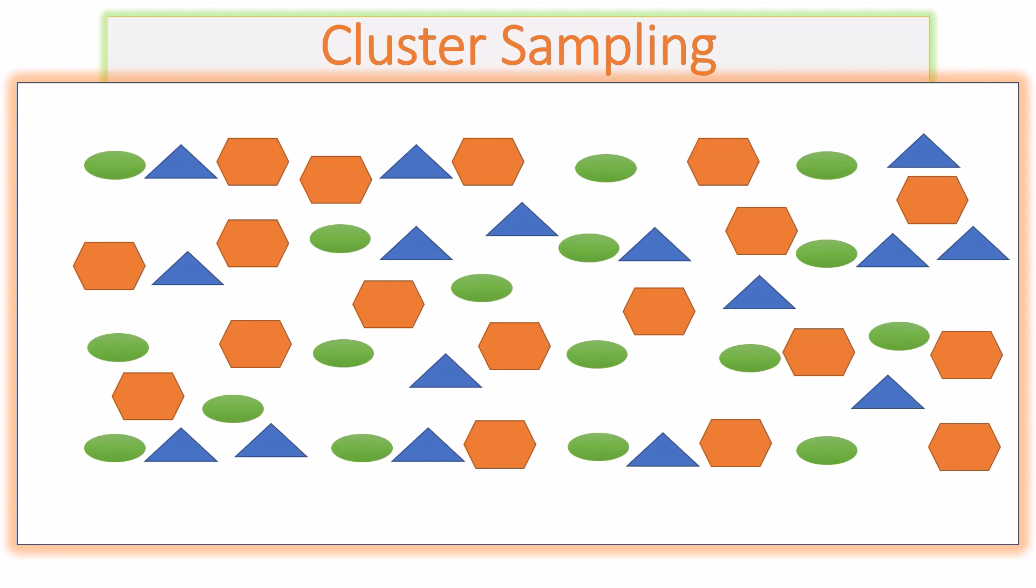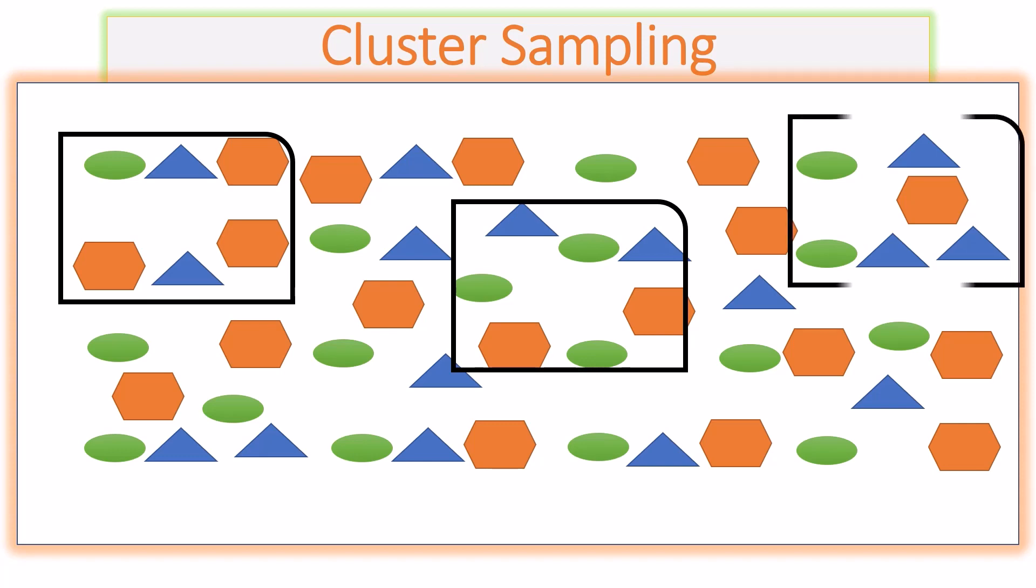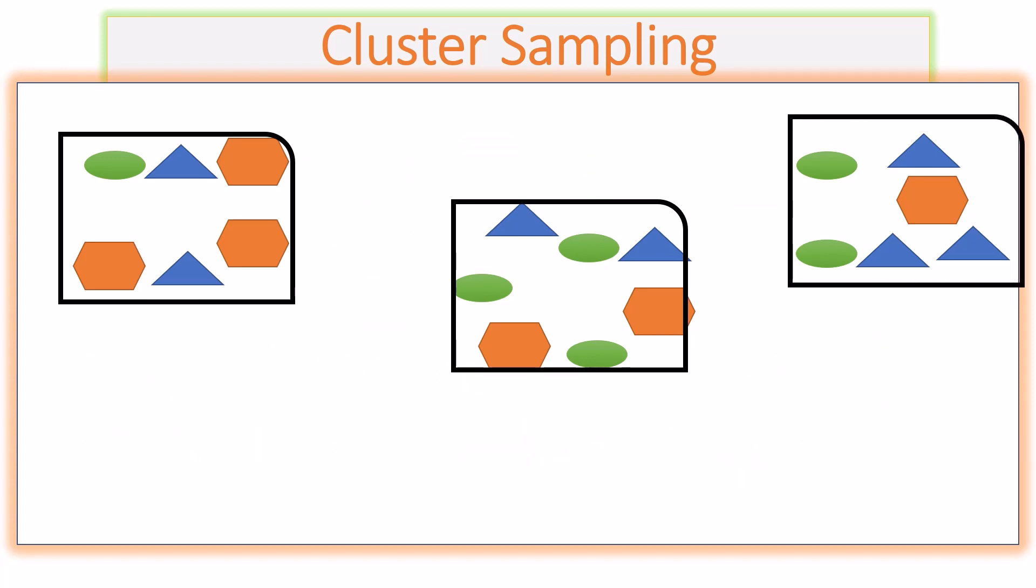Out of several clusters, a few are selected using simple random sampling. From the selected clusters, individual recording units are again selected using simple random sampling. Cluster sampling is more convenient and practical than simple random sampling which is more theoretically ideal.